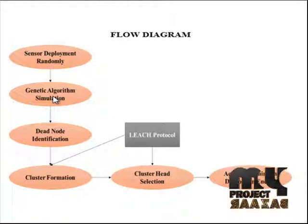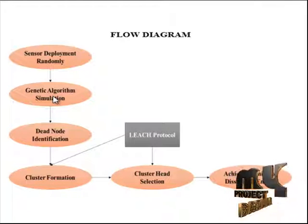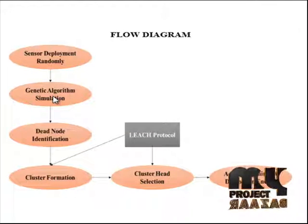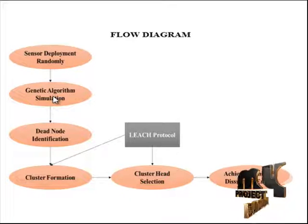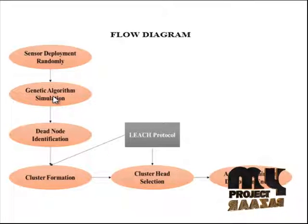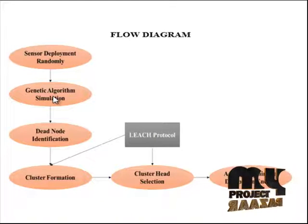Genetic algorithms are often viewed as function optimizers, although the range of problems to which genetic algorithms have been applied is quite broad. An implementation of a genetic algorithm begins with a population of chromosomes. One then evaluates these structures and allocates reproductive opportunities in such a way that chromosomes that represent better solutions to different problems are given more chances to be reproduced than those chromosomes which are poorer solutions. The goodness of the solution is typically defined with respect to the current population.